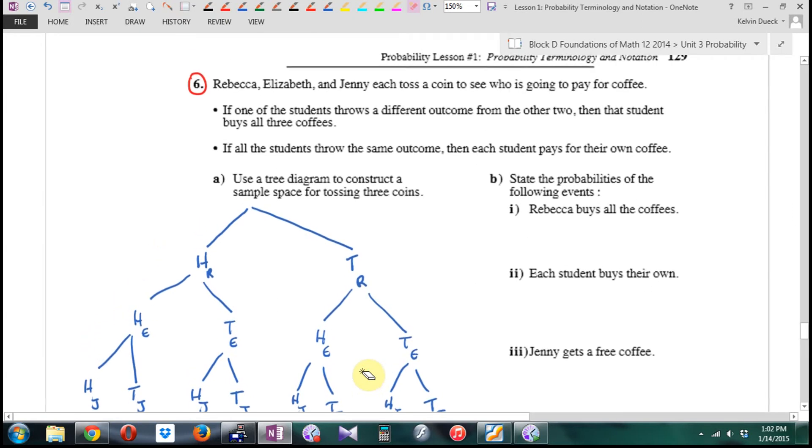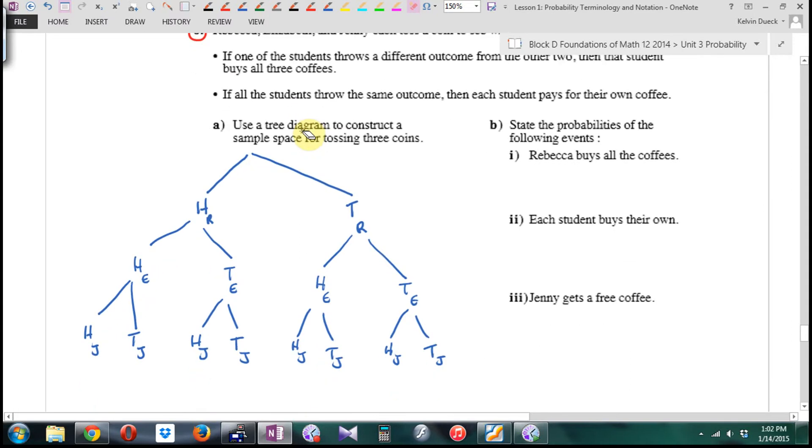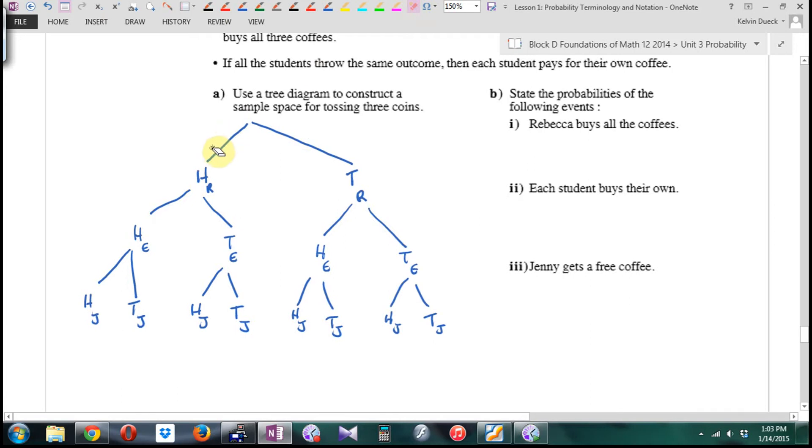By the way, how many outcomes are there? How many branches at the bottom? Eight. The textbook draws trees horizontally, and I learned to draw them vertically. So I tend to draw them starting at the top going down. But you can imagine this flipped sideways as well.